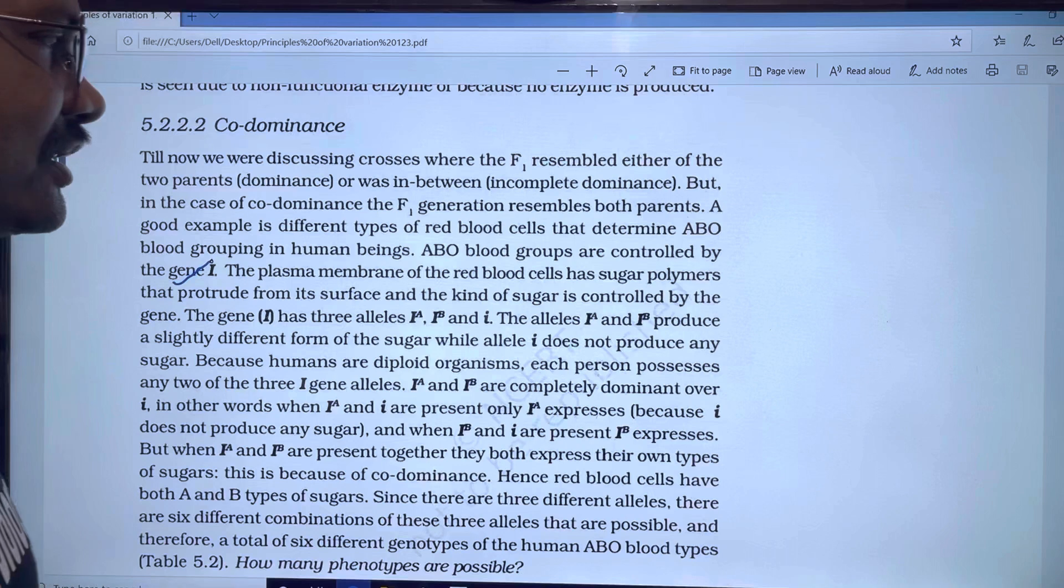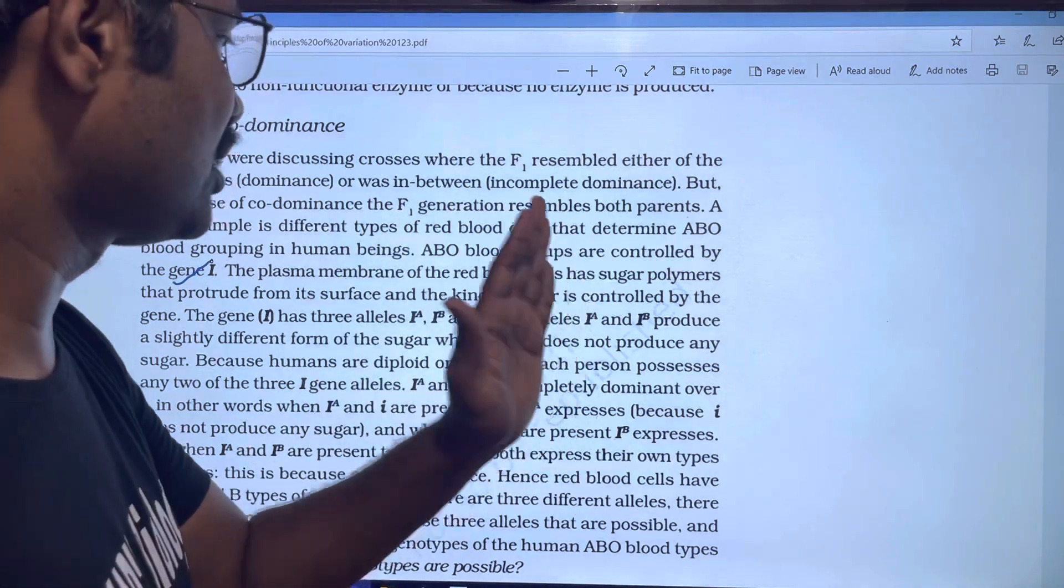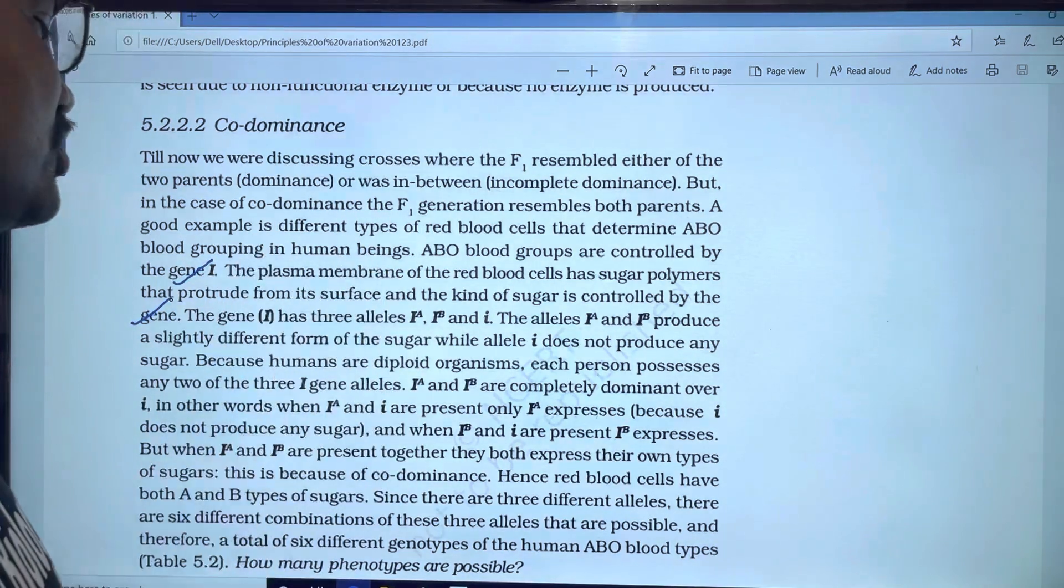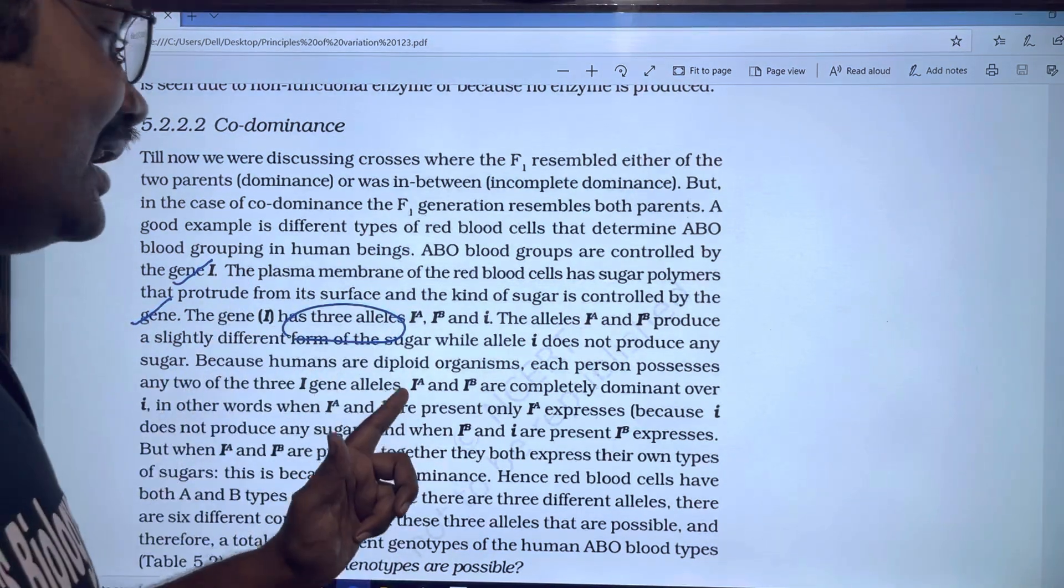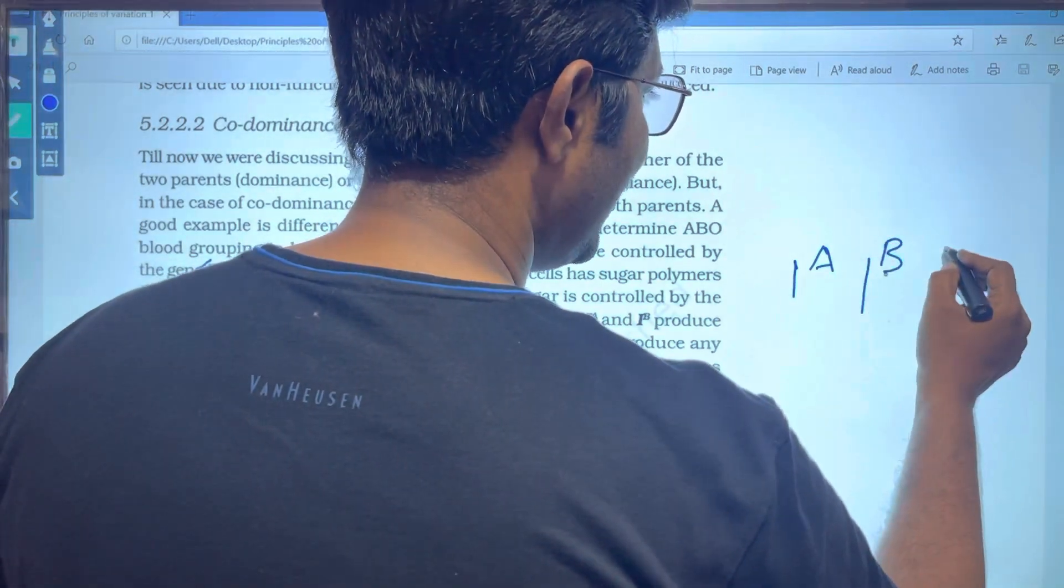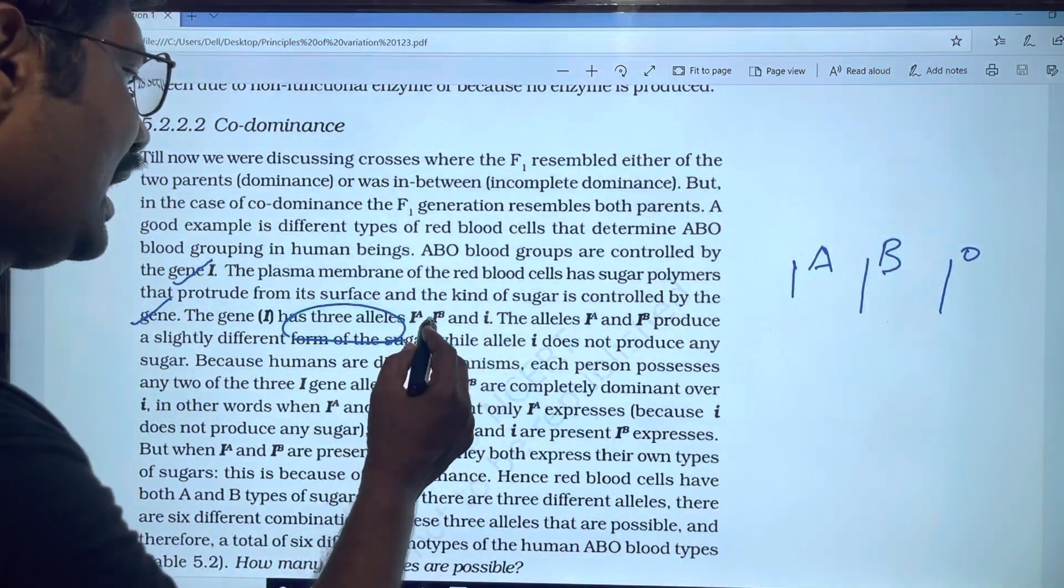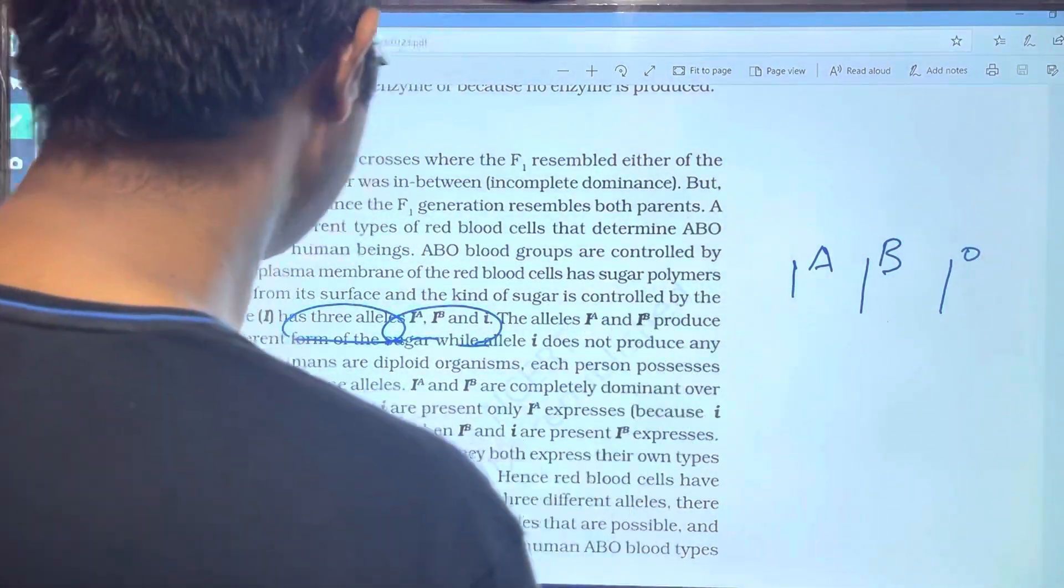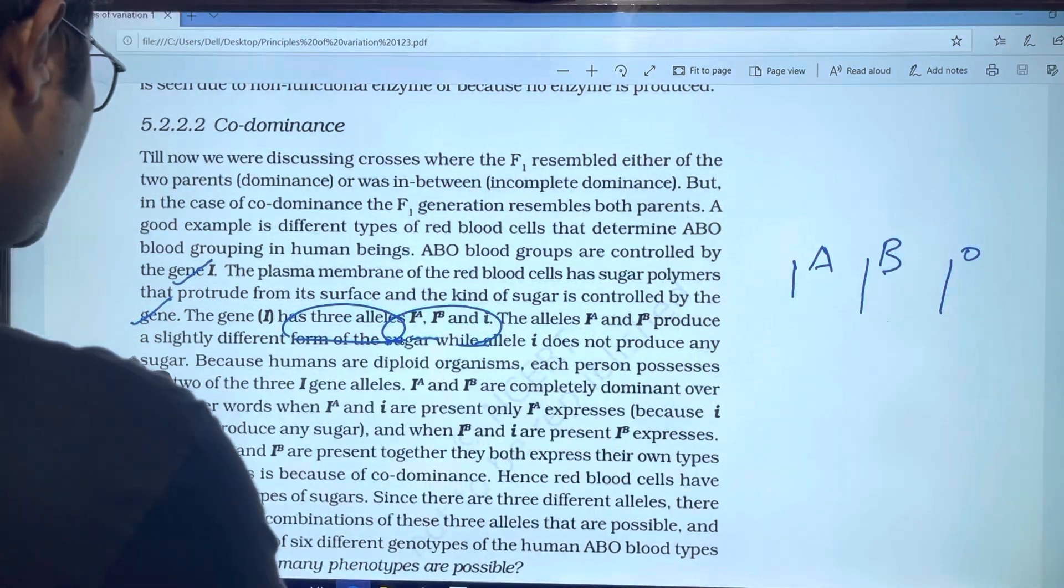The plasma membrane of the red blood cells has sugar polymers that produce from its surface, and the kind of sugar is controlled by the gene. Three alleles, most important - IA, IB, and I. IA and IB produce slightly different forms of the sugar, while allele I does not produce any sugar.